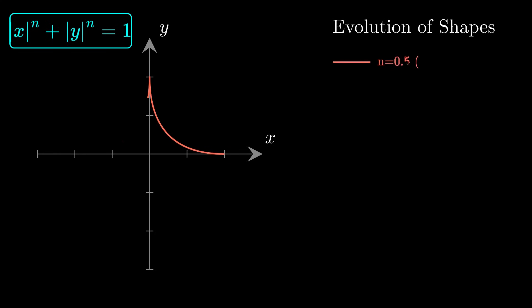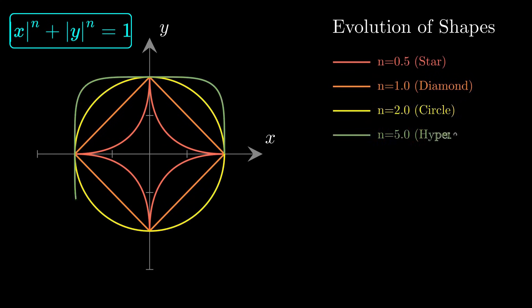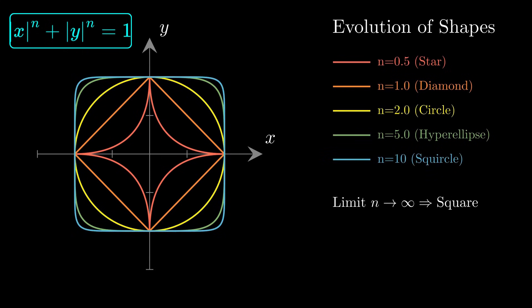Here is the full evolution from the sharp star at n equals 0.5 to the diamond at 1, the circle at 2, the hyper ellipse at 5, and the squircle at 10. As the exponent grows without bound, the shape approaches a perfect square.